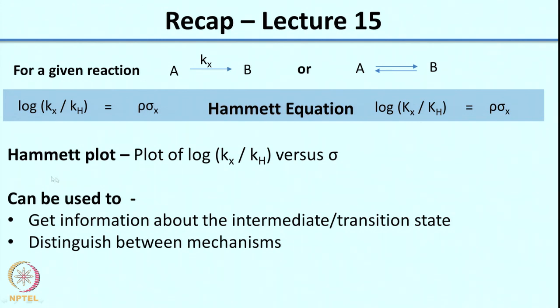We had looked at how this could be used to get what is called a Hammett plot for a reaction. The Hammett plot is a plot of log of k_x over k_H versus sigma, and the slope of the plot is your reaction constant, rho. This information could be used to get information about the intermediate or transition state of a particular reaction. We also saw how this could be used to distinguish between mechanisms — for example, between SN2 and SN1 mechanisms.